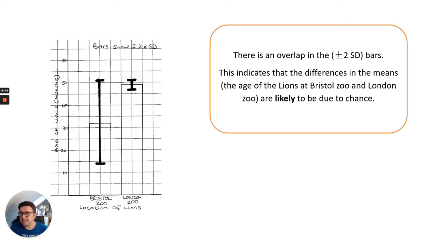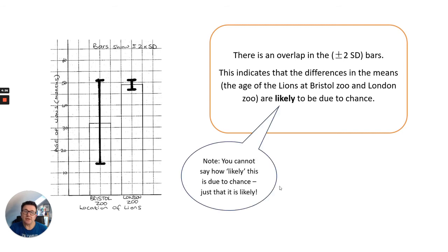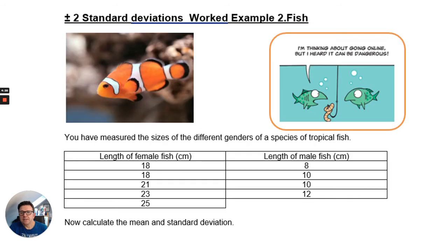So this indicates that the differences in the means, the age of the lions between Bristol and London Zoo are likely to be due to chance. So you cannot say how likely this is due to chance, just that it's likely, because this isn't a statistical test. So it's basically there is no real difference between the data. It's likely to be due to chance.